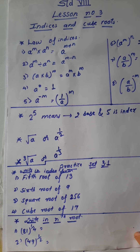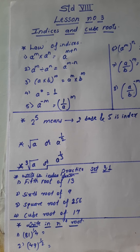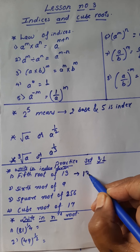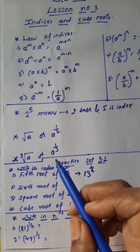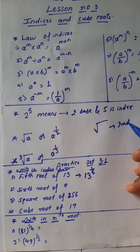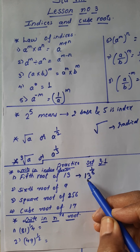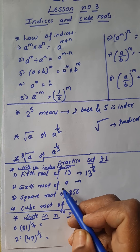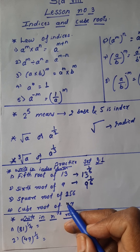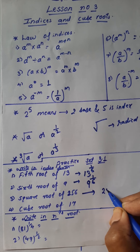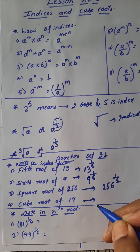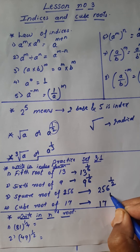Now we will study practice set number 3.1. In this question it is given as the 5th root of 13. The 5th root means the base is 13 and the power is 1 upon 5. This symbol is called a radical sign. Next, the 6th root of 9 — we write base 9 and power 1 upon 6. Next, the square root of 256 — we write 256 at the base and power 1 upon 2. Next, the cube root of 17 — we write 17 at the base and power 1 upon 3.